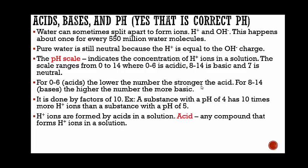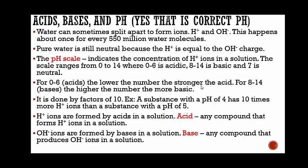Hydrogen ions are formed by acids in a solution. An acid is any compound that forms hydrogen ions in a solution. Hydroxide, OH- ions are formed by bases in a solution. A base is any compound that produces hydroxide, OH- ions in a solution.